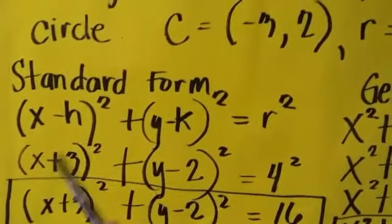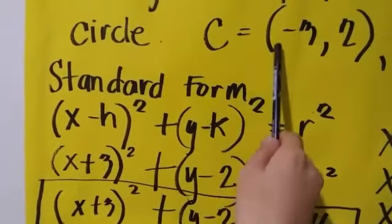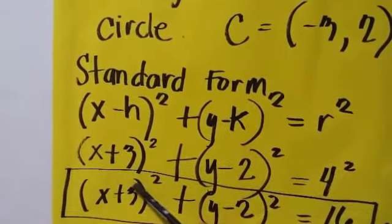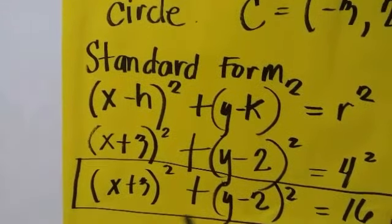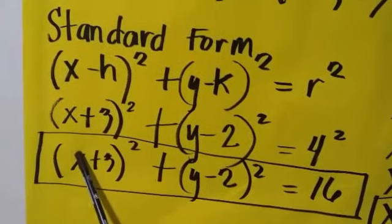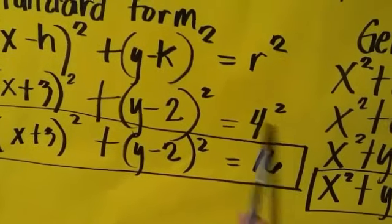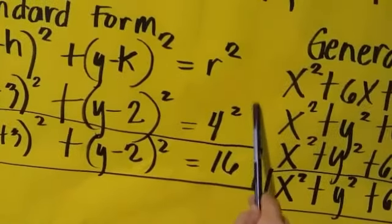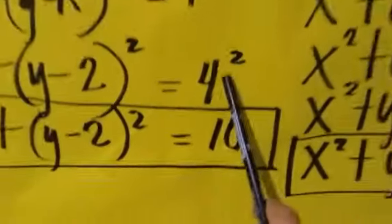If you are wondering why the 3 will become positive, it's because when we multiply negative times negative, it will become positive. So that's it. And our equation of the standard form is x plus 3 squared plus y minus 2 squared equals 16, because 4 squared will multiply by itself, so the answer is 16.